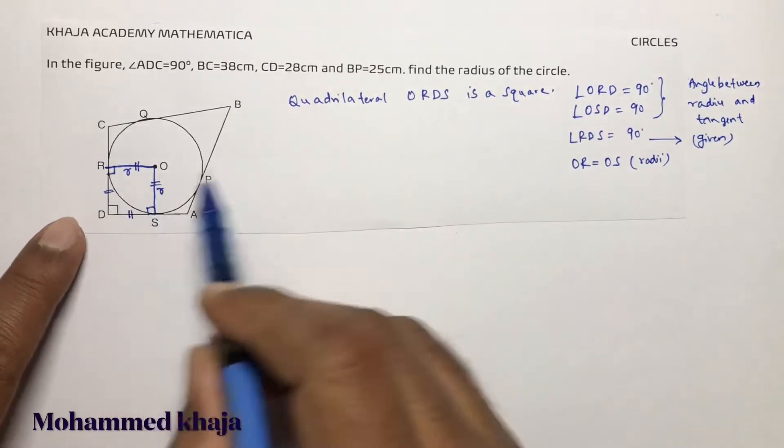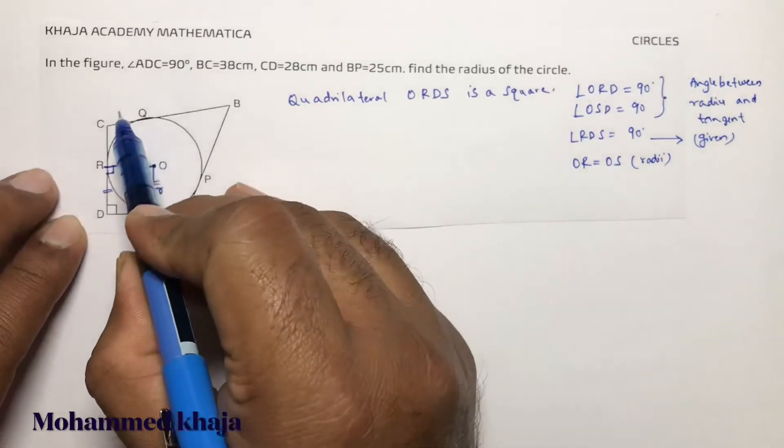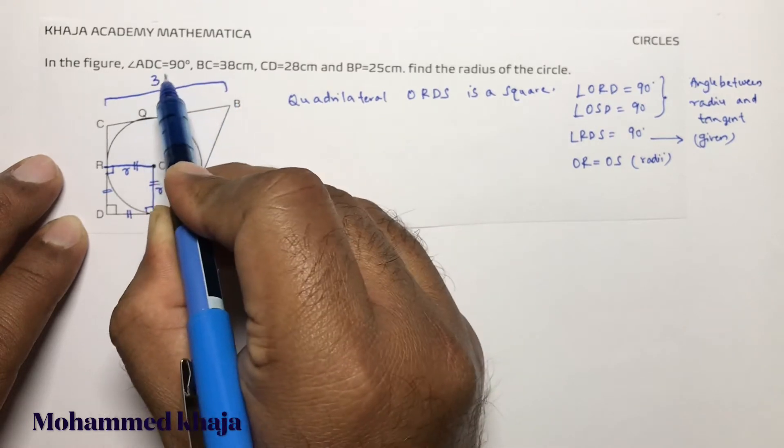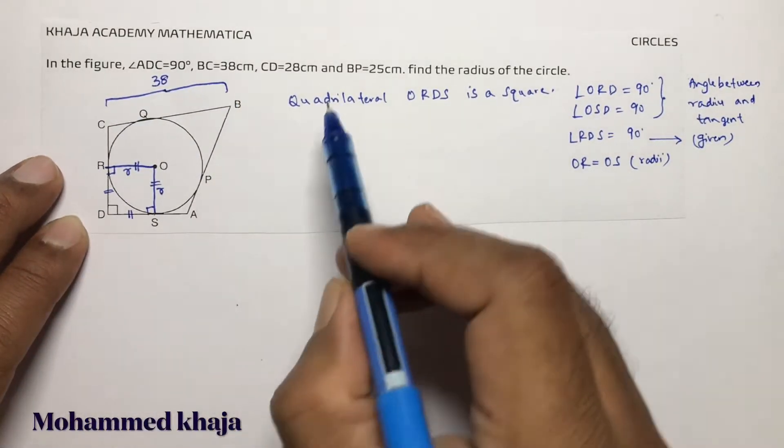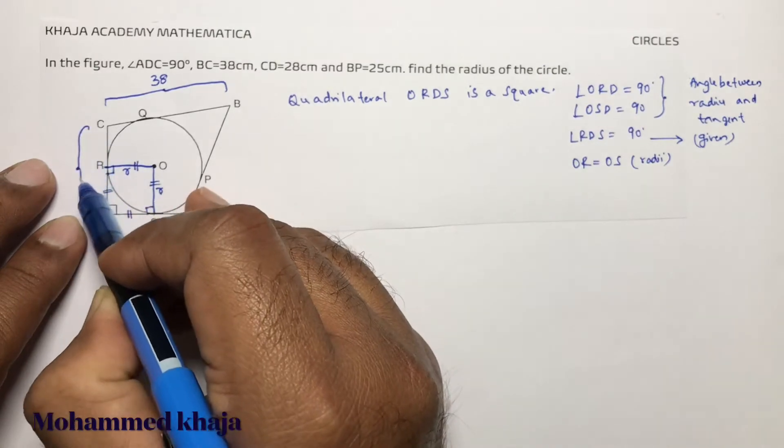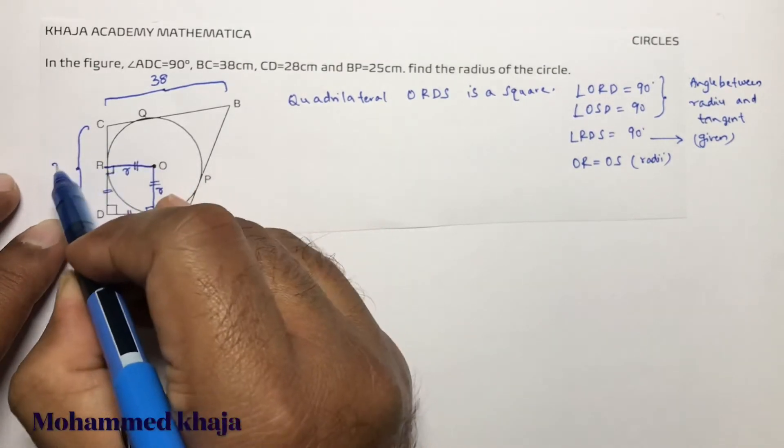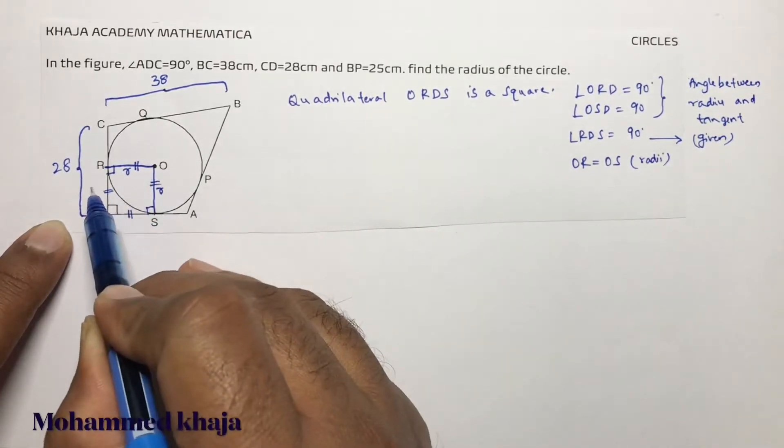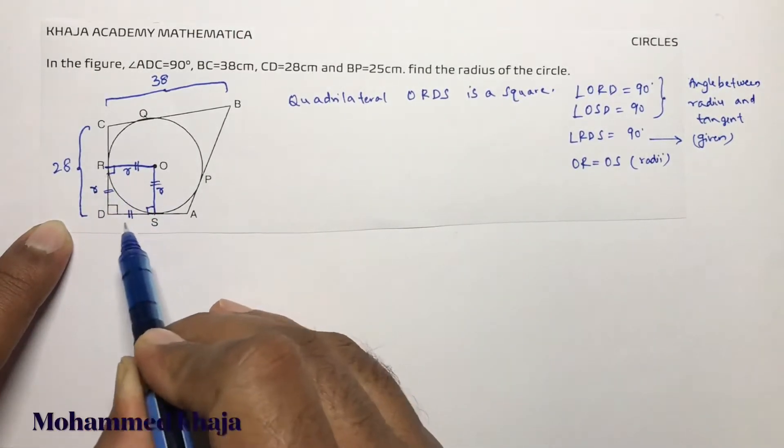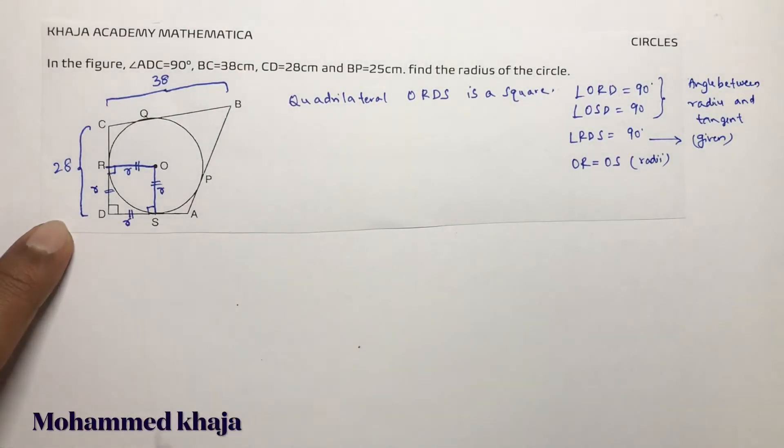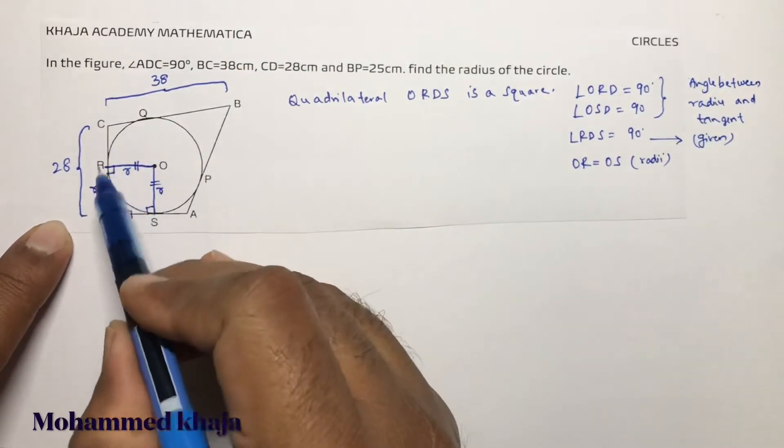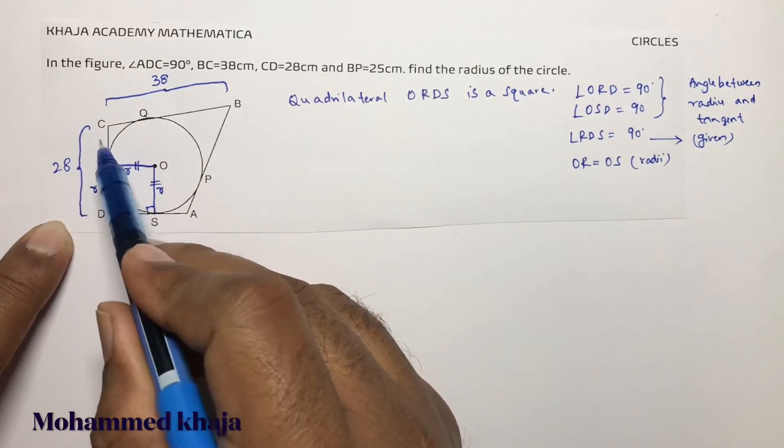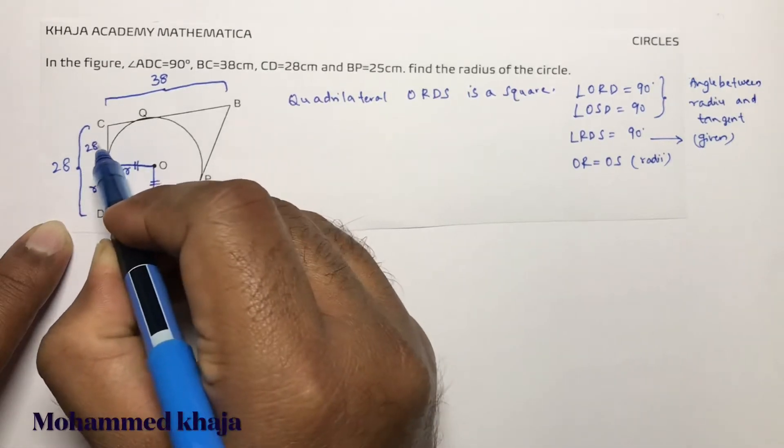Now, ORDS is a square. We need to find the radius. See, they gave BC, this total is 38cm, and CD, this total value is 28cm. Now when it is a square, this RD also will be R, and DS also will be R.